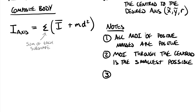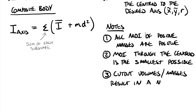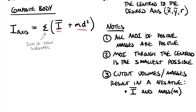Point three: cut-out volumes or masses result in a negative — both the I-bar of the cut-out shape and the mass M. In the composite body equation, both terms turn out negative for that cut-out shape. This applies when you drill a hole in something or have a void in your overall mass.